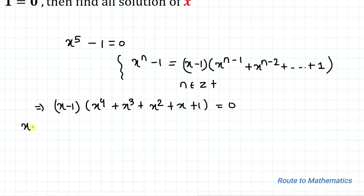From here we can directly write x minus 1 equals to 0, which implies x equals to 1 is one of the solutions.